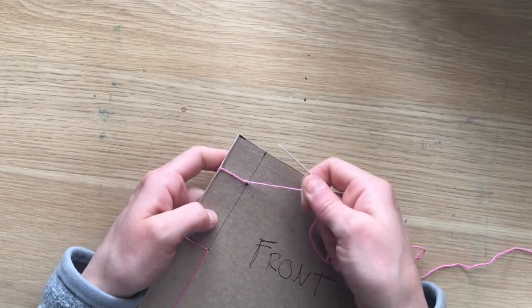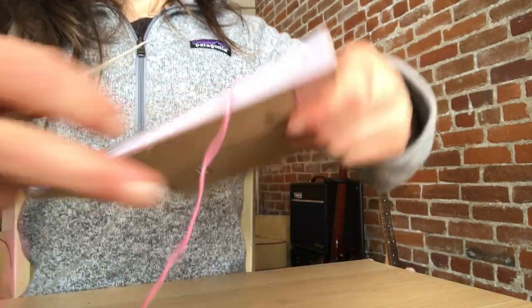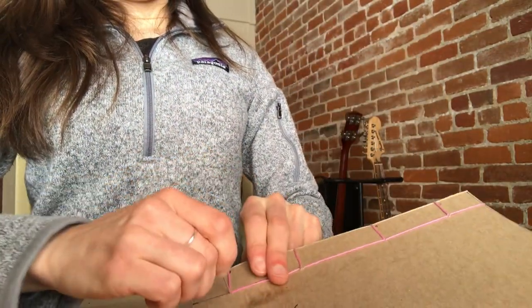And then just like we did at hole four where we made the little rectangle, we're going to do that again for the top of the book. So you're going to go around the top of the book and back through hole one.